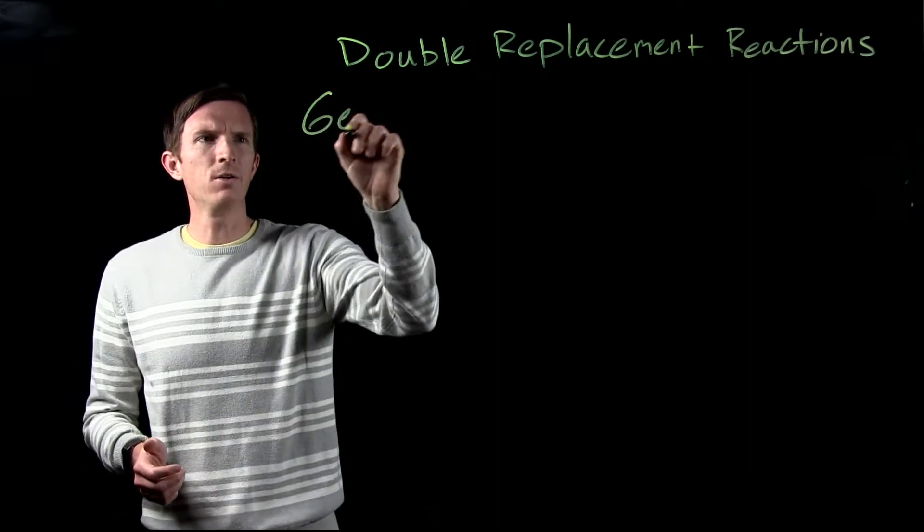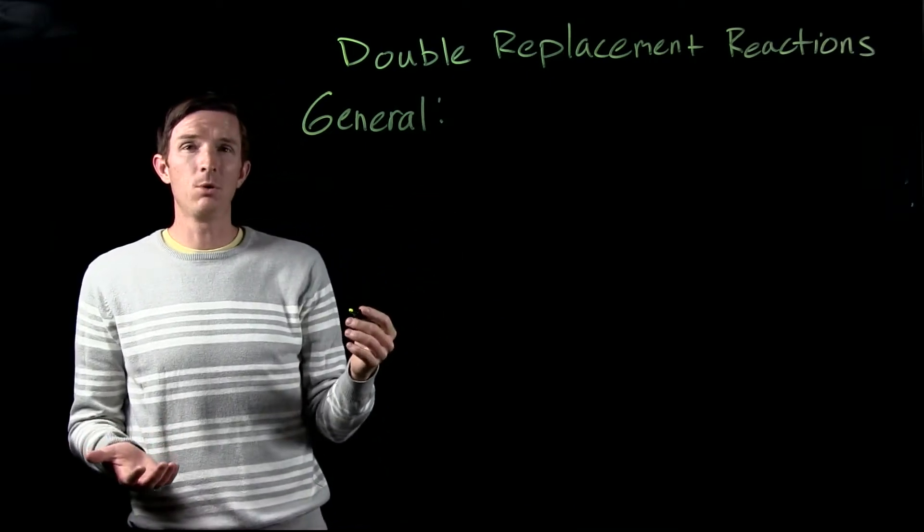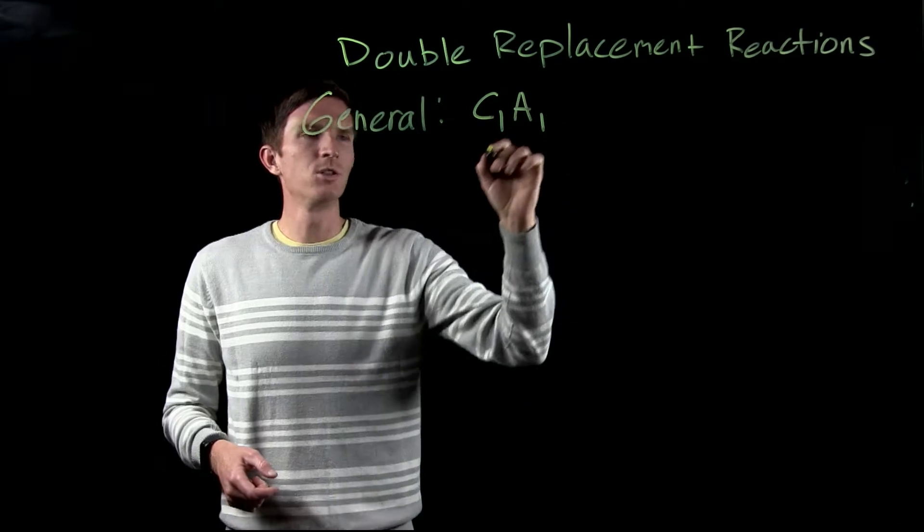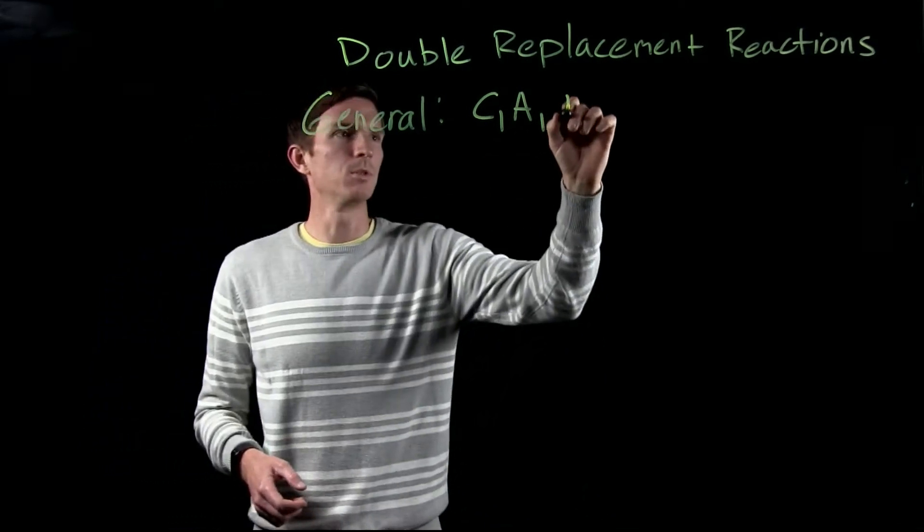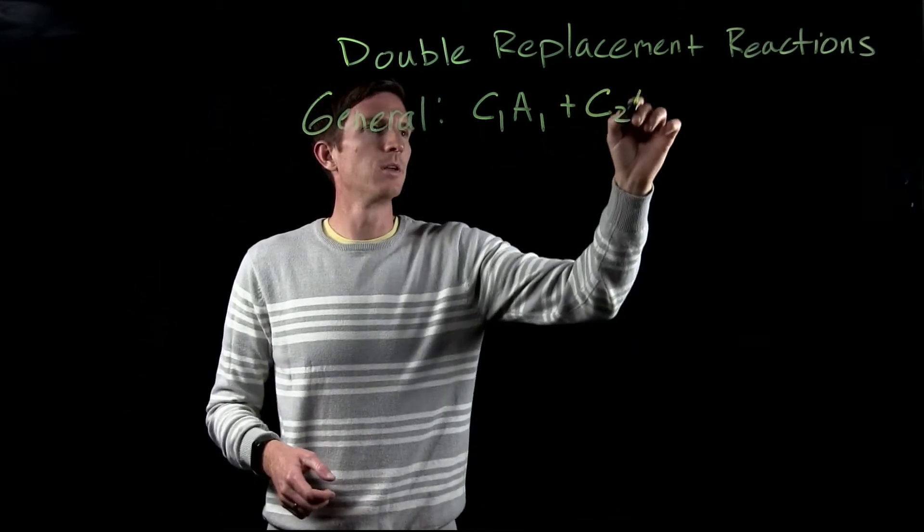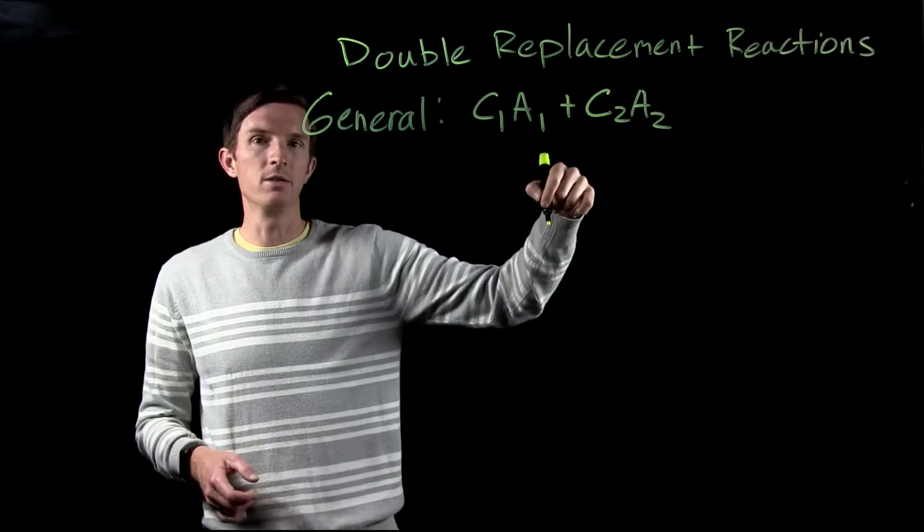Now we can just give a general type of formula of how we would look at these double replacement reactions. Basically we have two ionic compounds. So we call this cation 1, anion 1, reacting with another ionic compound, cation 2, anion 2.